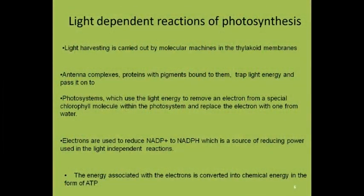We will first consider the light-dependent reactions. Light harvesting is carried out by molecular machines in the thylakoid membranes. Antenna complexes — proteins with pigments bound to them — trap the light energy and pass it on to photosystems, which use the light energy to remove an electron from a special chlorophyll molecule within the photosystem and replace it with one from water. Electrons are used to reduce NADP to NADPH, a source of reducing power used in the light-independent reactions. The energy associated with the electrons is also converted into chemical energy in the form of ATP.